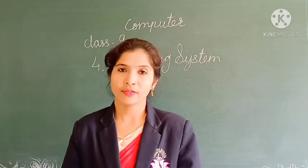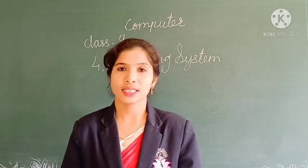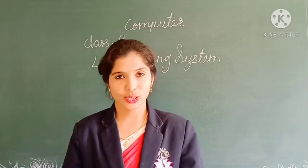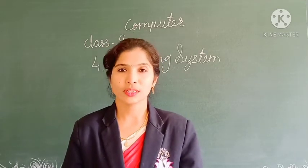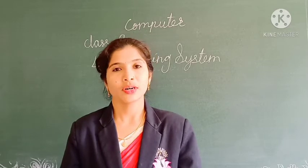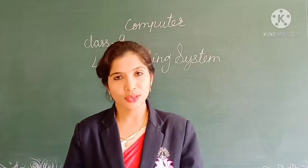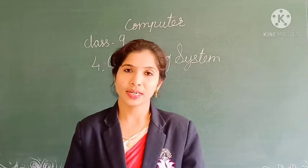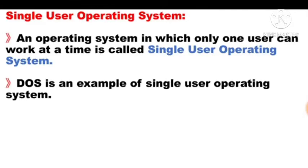We are going to see types of operating system: single user and multi-user operating system. First, we are going to see single user operating system. An operating system in which only one user can work at a time is called single user operating system. DOS is an example of single user operating system.